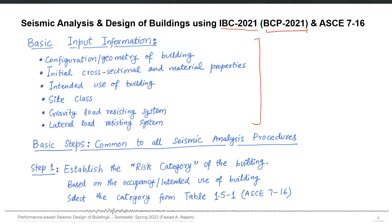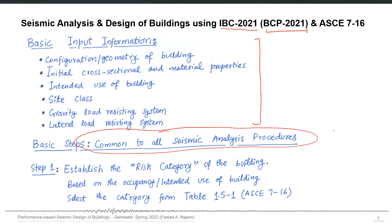Once we have all of this basic input information, we can start this step-wise process which is common to all seismic analysis procedures. This means that before we finalize or decide the analysis procedure we will adopt, we must pass through these first few steps, and then finally we reach the point where we select the seismic analysis procedure — whether it is the equivalent static analysis procedure, the response spectrum analysis, or the time history analysis. These are the common steps for all seismic analysis procedures.